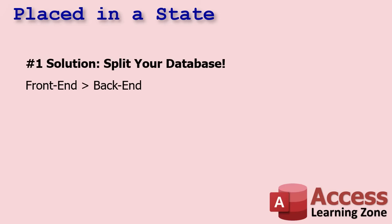Now, the number one reason people get this message is because they're sharing the same database file. Under regular circumstances, just using the database, you can get away with this for a while. Access is actually designed so that multiple people can read and write data — just the data, not the design of the database. So if you modify a form, a report, or change the table structure, it's going to cause this problem if everyone is sharing the same file.